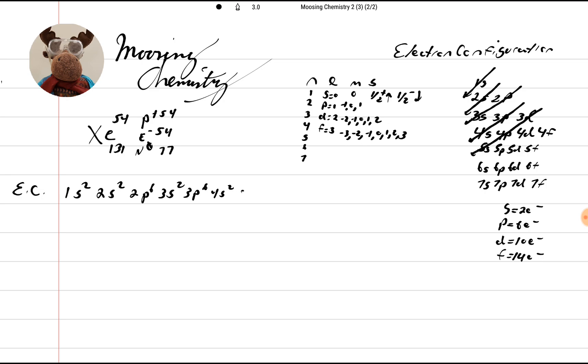And 5S2. So now we should probably go and count these electrons to see how we're doing. So now let's look here. We've got 2 and 2 and 6 make 10, 2 and 6 make 20, 30, 36, 38.